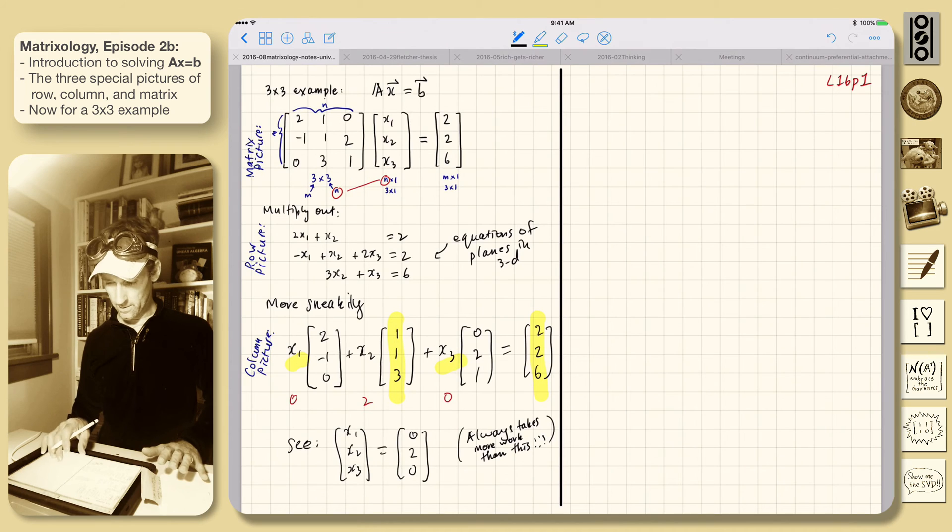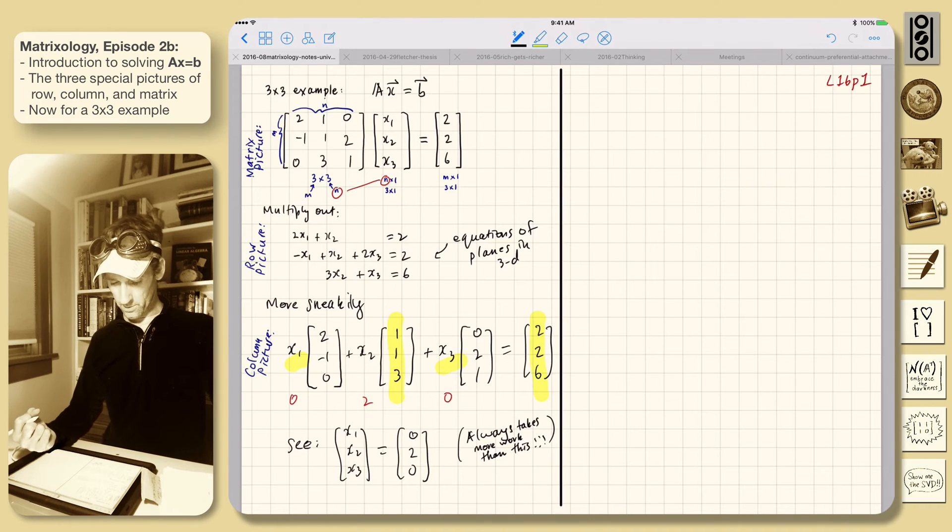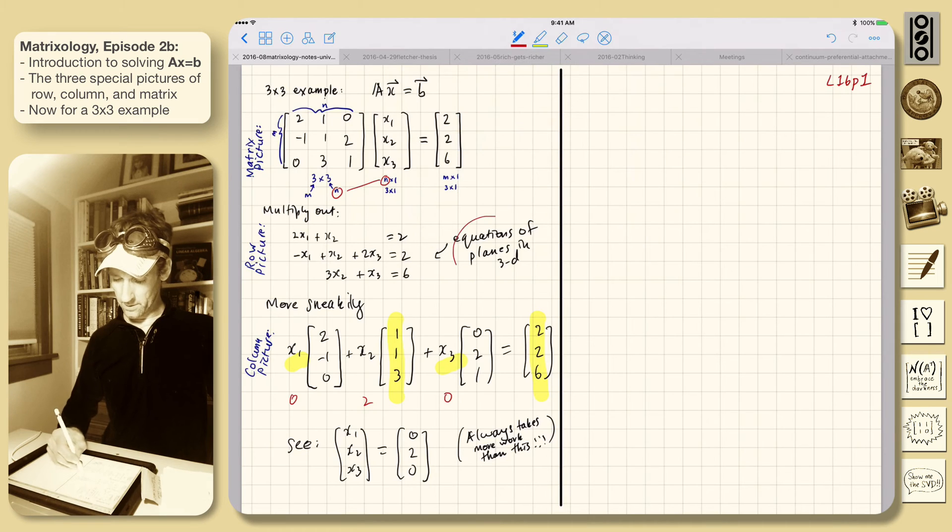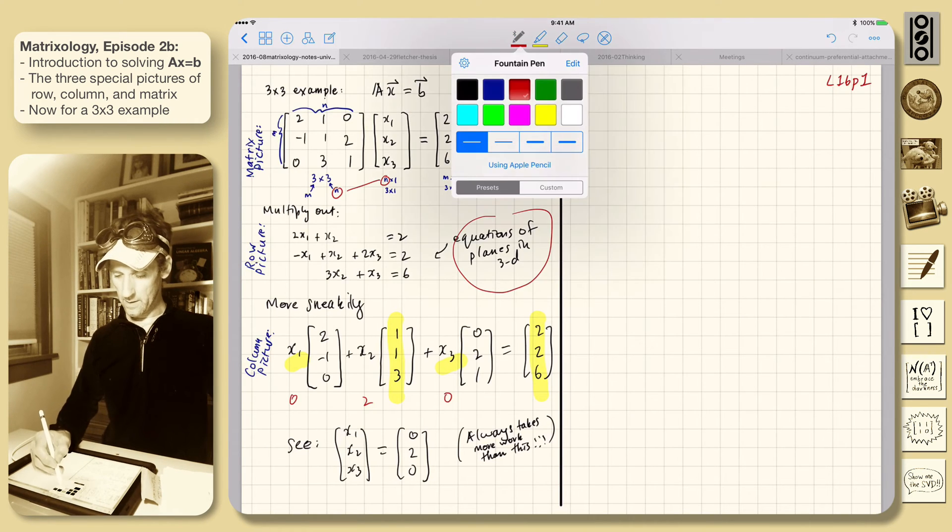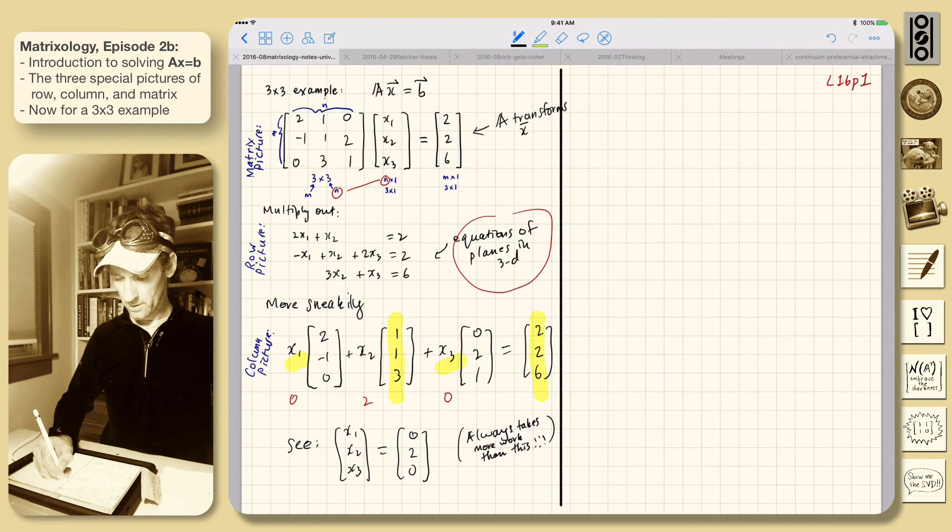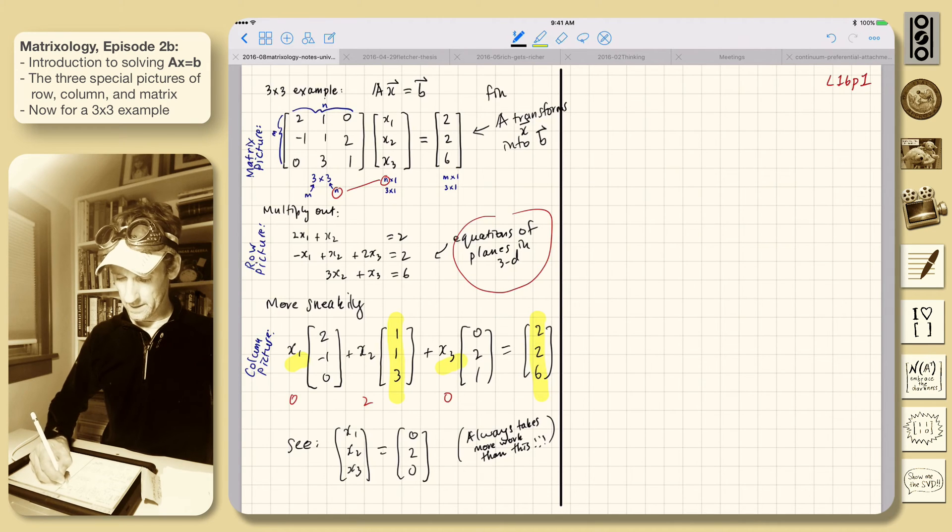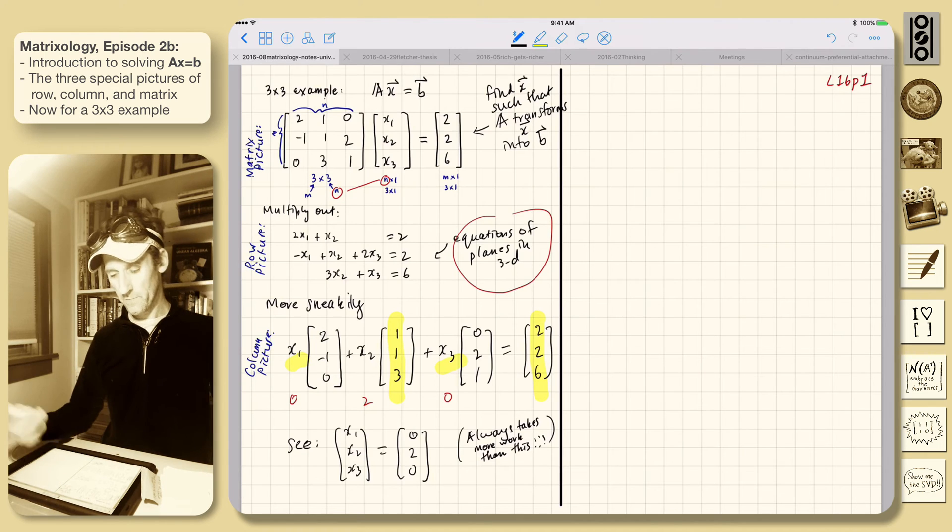And so let's say what these things do. Right? So the row picture. So we're finding where three planes, I've said it here I guess, three planes, equations of planes. So we want to find where they intersect. Here it's, this is about A transforms x into b. Right? And we have to find, we have to find the x for which A will transform it. Right? So we find x such that A transforms x into b.